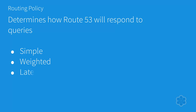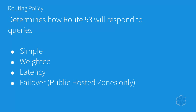The latency routing policy is suitable when you have resources in multiple EC2 data center locations that perform the same function, and you want Route 53 to respond to DNS queries with resources that provide the lowest latency. The failover routing policy is for public hosted zones only, and is used when you want to configure an active-passive failover, in which a single resource takes all the traffic when it's available, and in the event that it fails, the secondary takes the load.